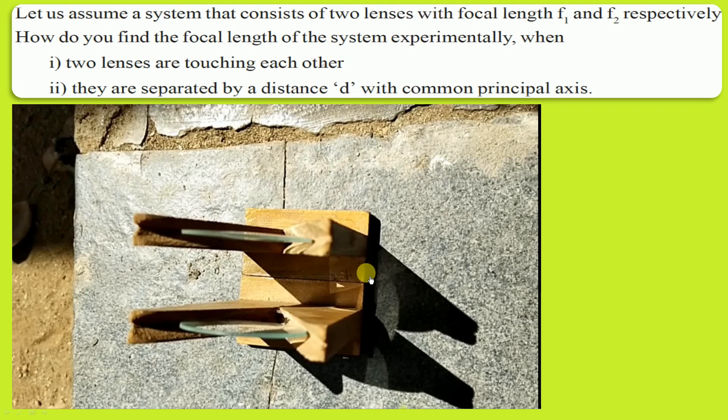The distance between the two lenses is 4 centimeters — that is D. In the question, D is given as 4 centimeters.